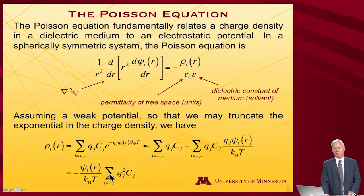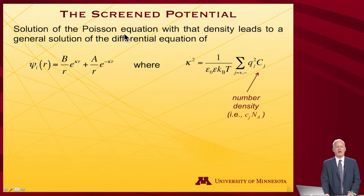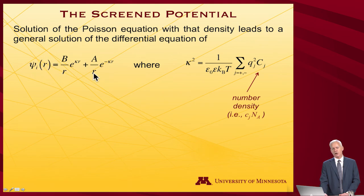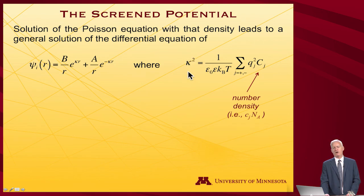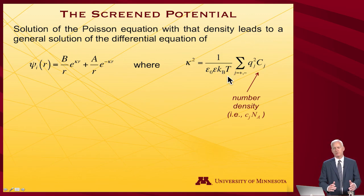Substituting this into the Poisson equation gives a differential equation in the electrostatic potential. Solving it — which is a good exercise in differential equations — yields a general solution: psi equals B over r times e to the kappa*r, plus A over r times e to the minus kappa*r. Here kappa squared collects all the constants: number densities, charges, dielectric constant, and kT.